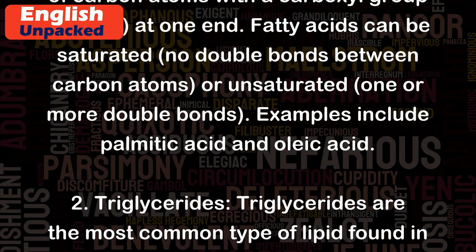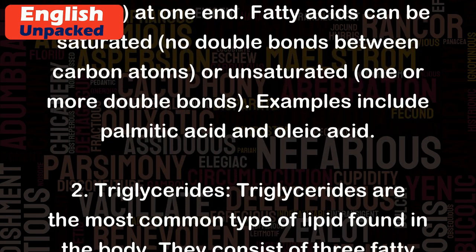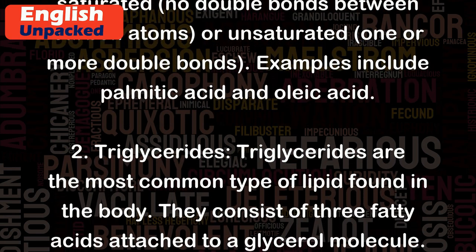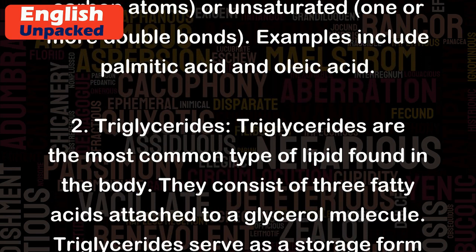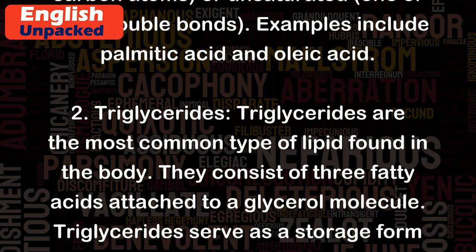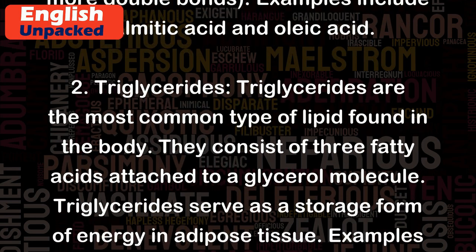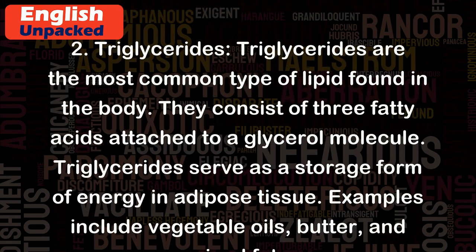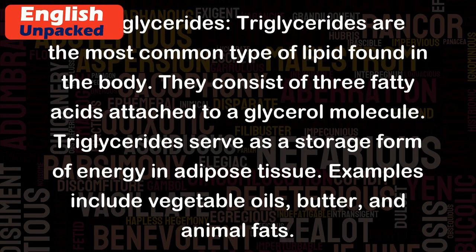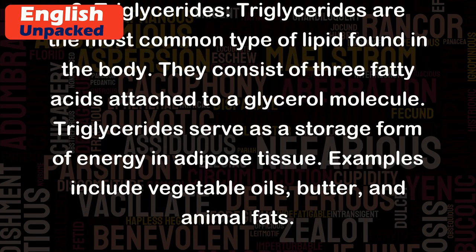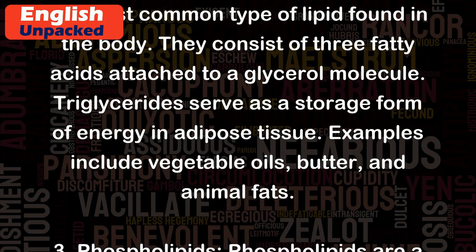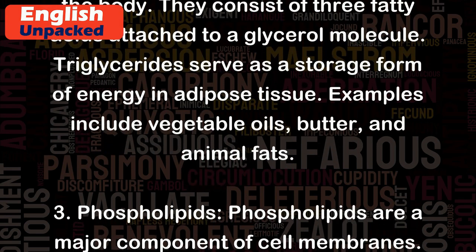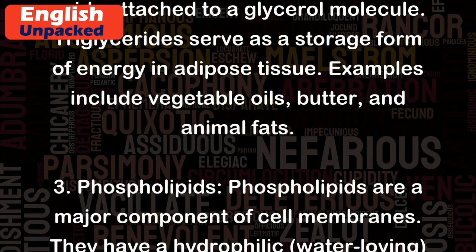2. Triglycerides. Triglycerides are the most common type of lipid found in the body. They consist of three fatty acids attached to a glycerol molecule. Triglycerides serve as a storage form of energy in adipose tissue. Examples include vegetable oils, butter, and animal fats.